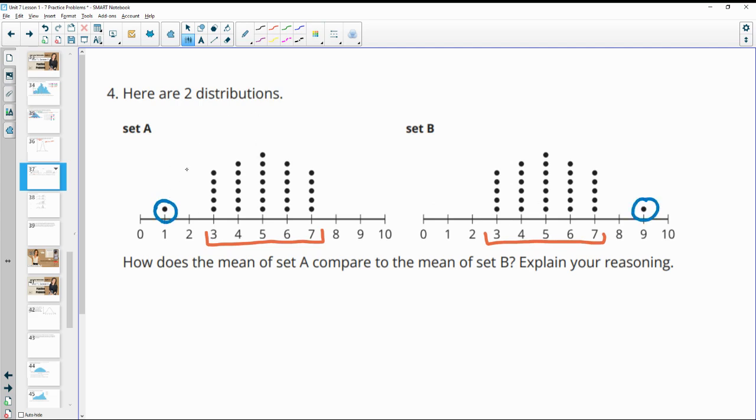This one is going to pull your mean lower because it's going to give you a lower total. You have the same number of dots but a lower total. And here you're going to have a higher total because you have a nine versus an eight, and that's going to give you a higher mean.